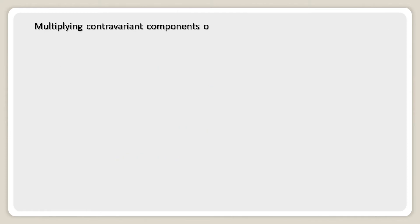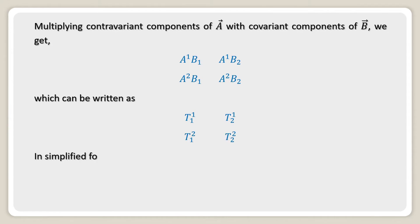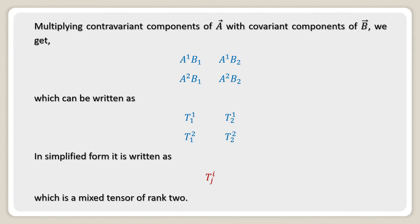Multiplying the contravariant components of vector a with the covariant components of b, we get a1b1, a1b2, a2b1, and a2b2, which can be written as t upper suffix 1 lower suffix 1, t upper suffix 1 lower suffix 2, t upper suffix 2 lower suffix 1, and t upper suffix 2 lower suffix 2. In simplified form, this is written as t upper suffix i lower suffix j, where i and j vary from 1 to 2, which is a mixed tensor of rank 2.